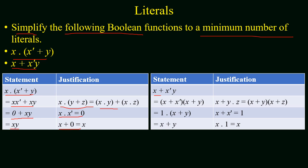In the second example, we reduce the Boolean function x + x'·y. Applying the specified law, we get (x + x')(x + y). Since x + x' equals one, the overall expression reduces to x + y. Note that the two given Boolean functions were duals of each other, so the answers obtained are also duals of each other.